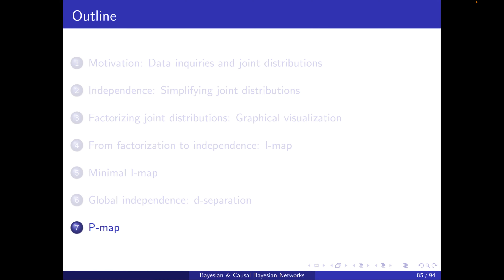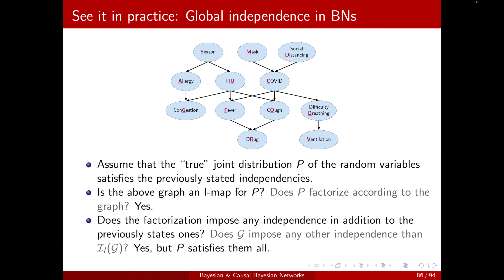Welcome to Section 7, PMAP. Back to our COVID example, we ended up here asking whether the factorization, according to this graph, imposes any conditional independence in addition to the local ones. We thought the answer was yes, because of the global independencies and the whole story with D-separation. But the point was that P, the original distribution that factorizes according to this graph, it satisfies all of them.